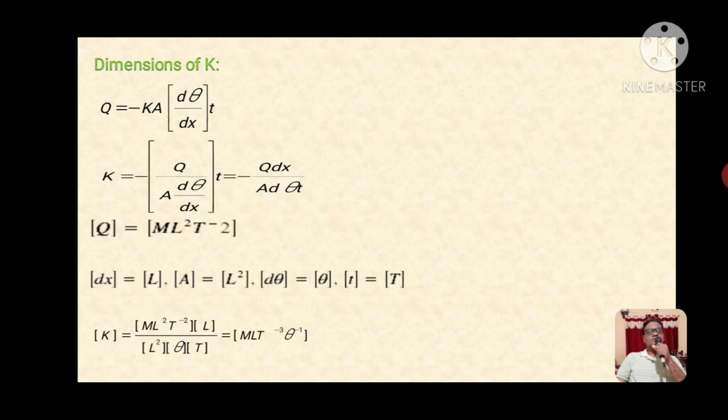Q has dimensions of energy, so dimension of Q equals ML² T⁻². Dimension of x is length L. Dimension of A is L² (area). Dimension of d theta is theta (temperature). Dimension of t is time, given by capital T.